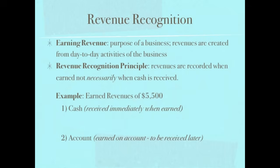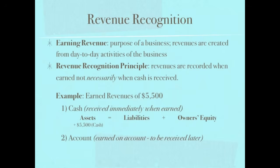In scenario one, we earn these revenues and receive the cash. How does that affect our accounting equation? Recall: assets equal liabilities plus owner's equity. We're receiving cash — cash is an asset — so assets are going up by $5,500. Are we incurring a liability? No, we're earning revenue. Revenues affect net income by increasing it. Net income affects retained earnings, and retained earnings falls under owner's equity. Therefore revenues make retained earnings go up, making owner's equity increase by $5,500, and our accounting equation balances.